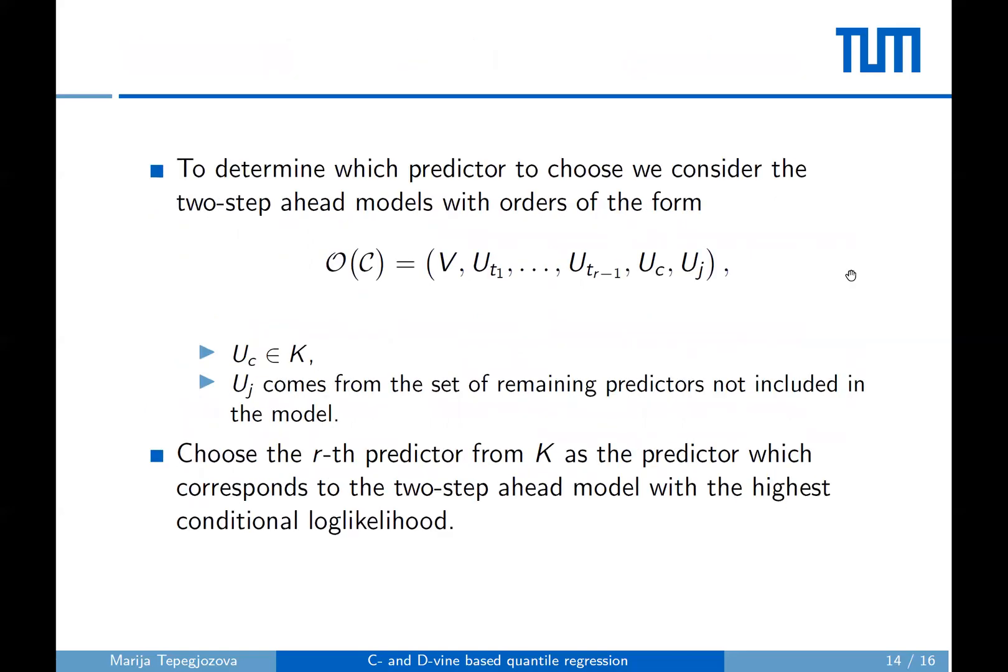Then, to determine which predictor from the candidate set to choose, we consider the two-step-ahead models with orders of this form. Uc are the candidate predictors and Uj is coming from the set of remaining predictors not included in the model. And finally, we choose the Rth predictor as the candidate predictor which corresponds to the two-step-ahead model with the highest conditional log likelihood.